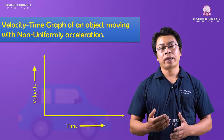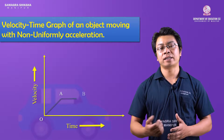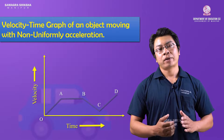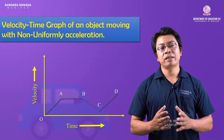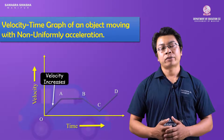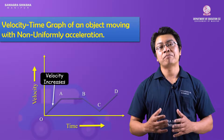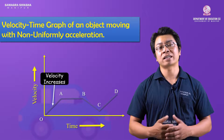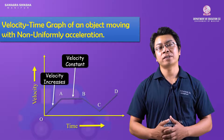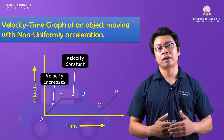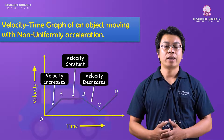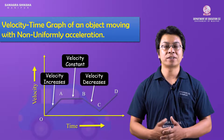In the combined velocity-time graph with portions O, A, B, and C: the O-A portion shows the body's velocity increasing, meaning non-uniform acceleration. The A-B portion is parallel to the time axis, meaning the body's velocity is constant. The B-C portion shows the body's velocity increasing again.